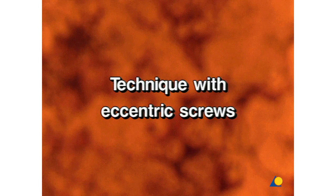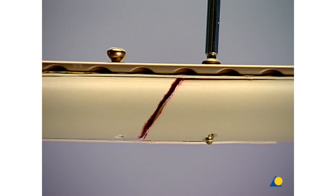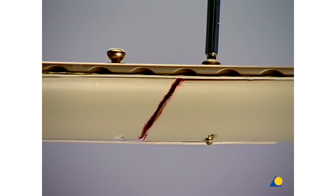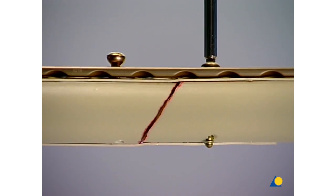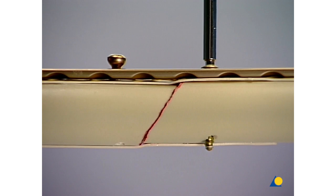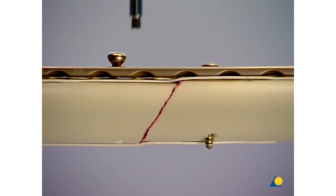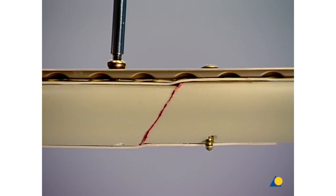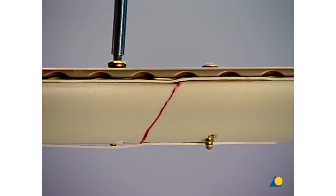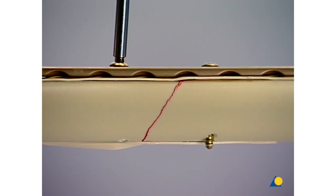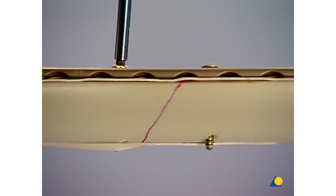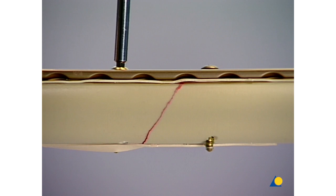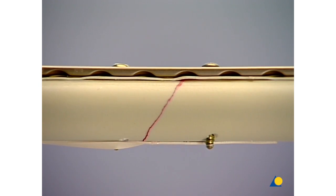Technique with Eccentric Screws. If a fracture gap should remain after the approximate reduction of a simple shaft fracture, it can be reduced by means of eccentrically inserted screws. This technique only allows manipulation coaxial to the longitudinal axis of the plate or the bone. The maximum reduction distance is limited to four millimeters. In cases where larger reductions are necessary, we recommend using either a tension device or the pull technique with the bone holding forceps.